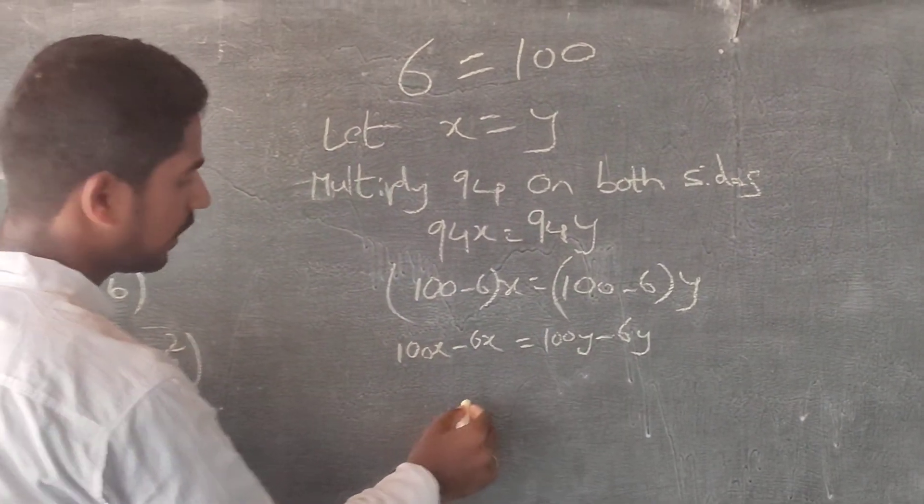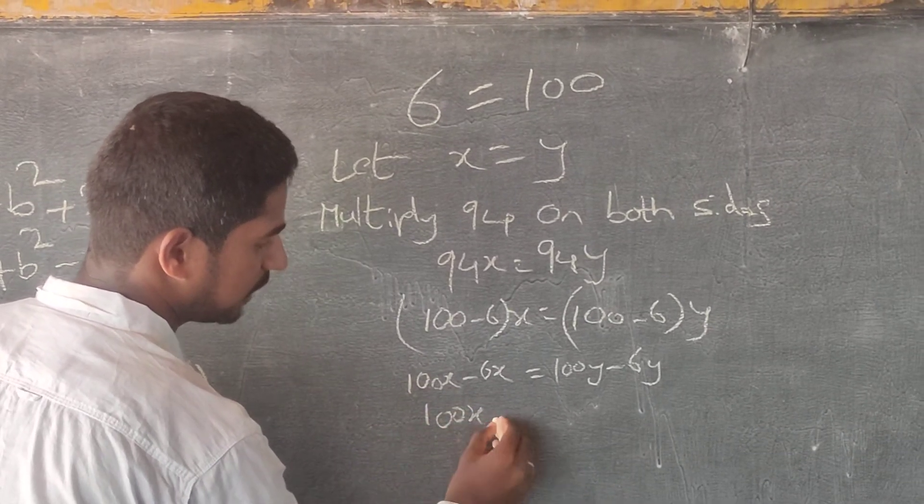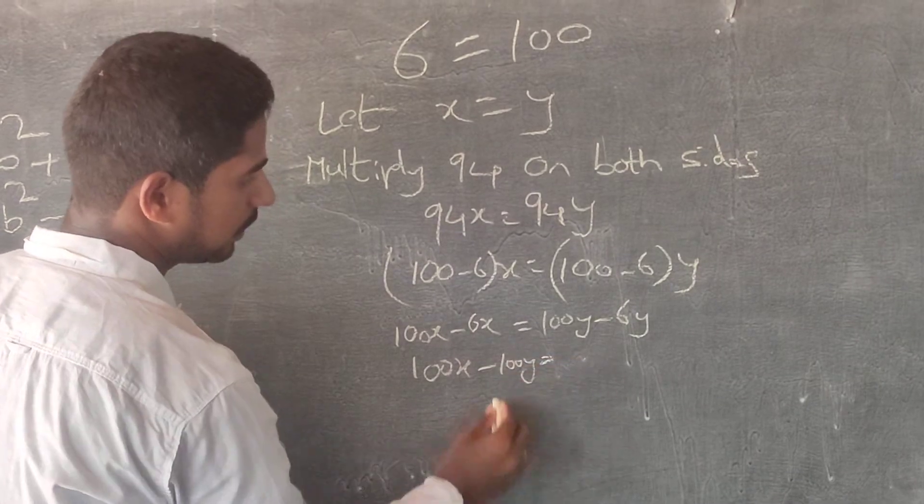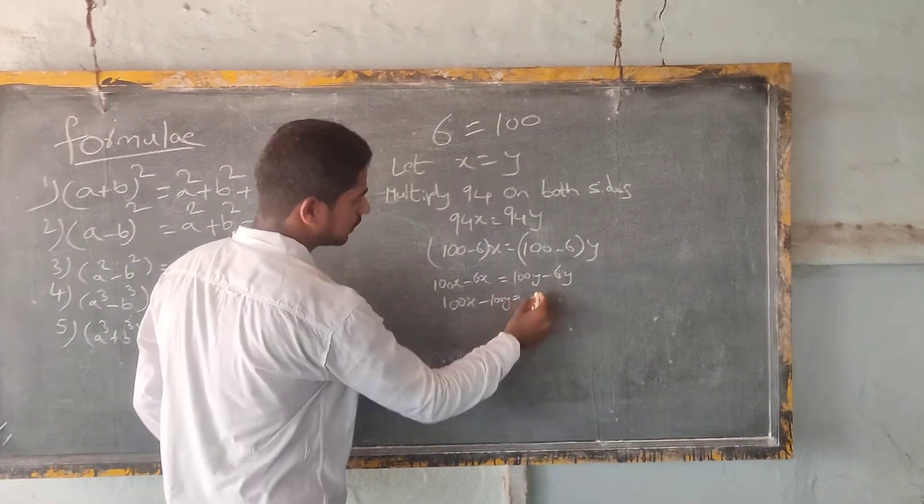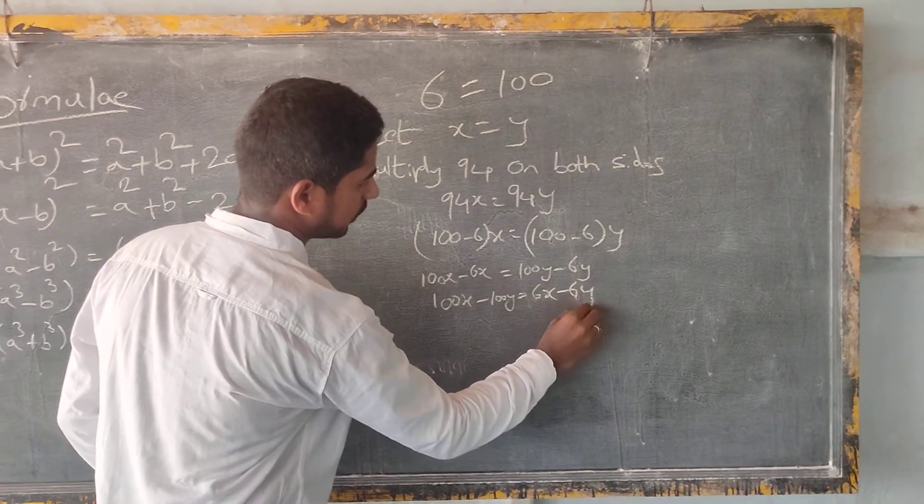Let us write hundred x and hundred y one side. Hundred x minus hundred y is equal to, take this into the left side. Six x minus six y.